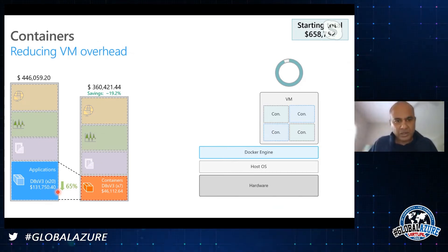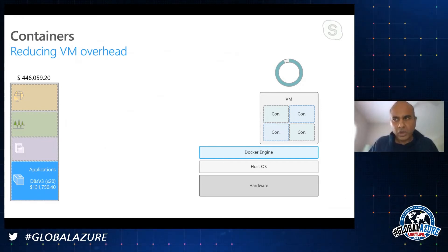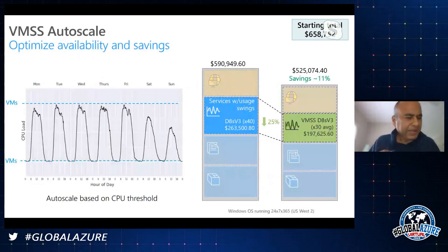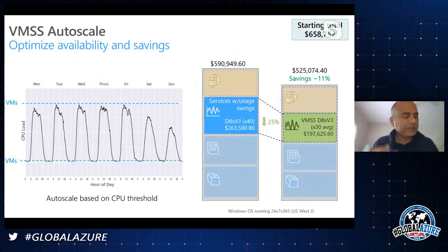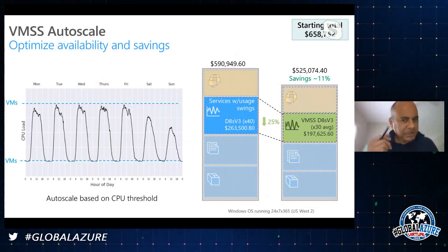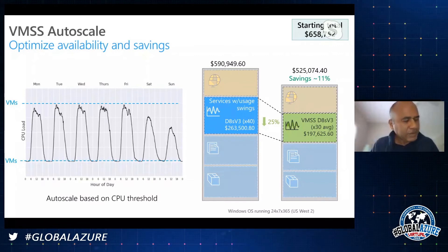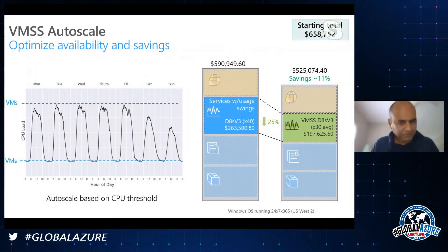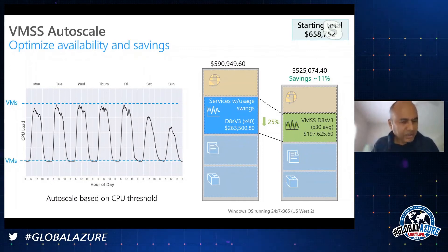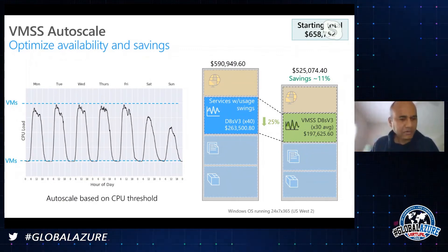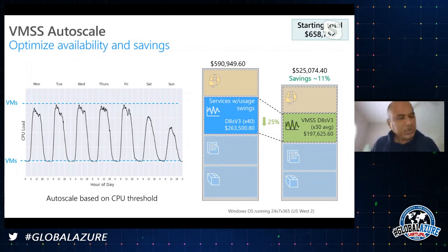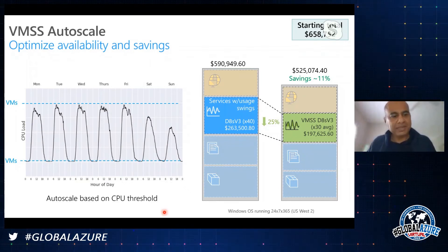In the auto-scaling option, there are auto-scaling parameters built in based on which you auto-scale. Here's an opportunity for developers to further optimize: sometimes using only a CPU threshold may not be the most optimal trigger. Maybe there's an application characteristic that better represents when you want to scale - like exposing a custom performance counter or some other logic that allows you to scale more efficiently.